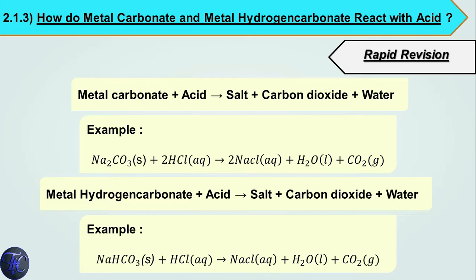Now let's see how metal carbonates and metal hydrogen carbonates react with acid. When metal carbonate reacts with acid, it forms salt, carbon dioxide gas, and water. For example, sodium carbonate reacting with hydrochloric acid produces NaCl (salt), H2O (water), and CO2 (carbon dioxide gas).